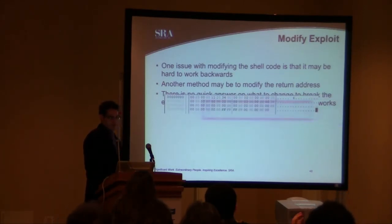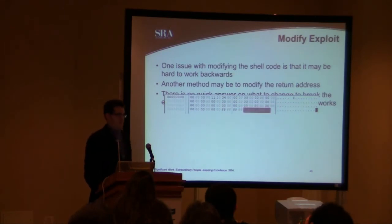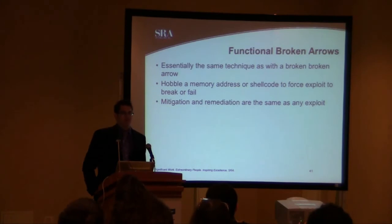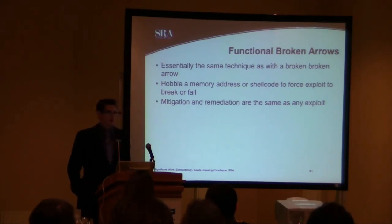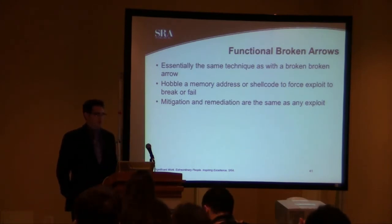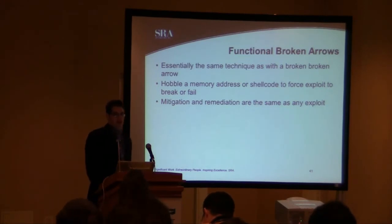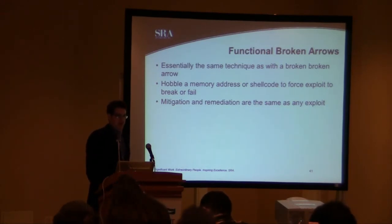In this case, you could maybe take that memory location — that 0C — and change it to something else that you might control. With a functional broken arrow, it's essentially the same technique once you actually break it and figure out where the issue is. Hobbling a memory address or shellcode to force the exploit to break or fail is definitely a useful technique. Mitigation or remediation are the same as with any exploit at that point.